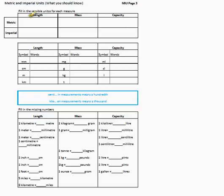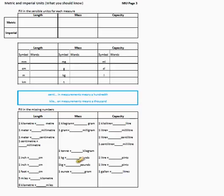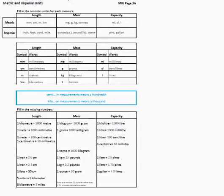Here I have a list of the names of the metric and imperial units for length, mass, and capacity or volume that you need to know, along with the symbols for them, and all the numbers you need to remember at the bottom. Try to fill this in — pause the video and do as many as you can. I'm moving now to the answers so you can check how many you knew.